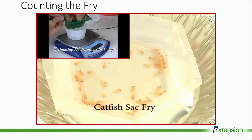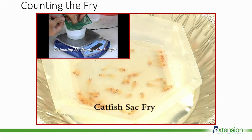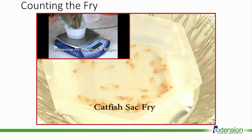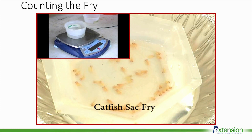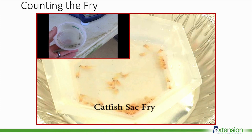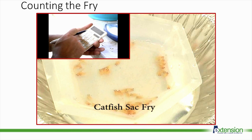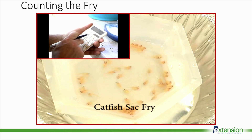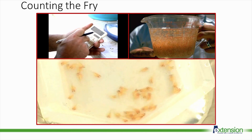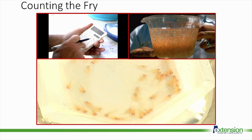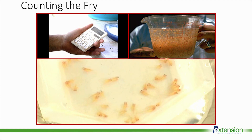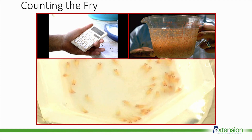Farmers need to know how many fry they have so they can accurately stock them into the ponds. Several samples of the fry are counted by weight. Using the sample data, the rest of the fry are counted either using volumetric displacement or by weight.